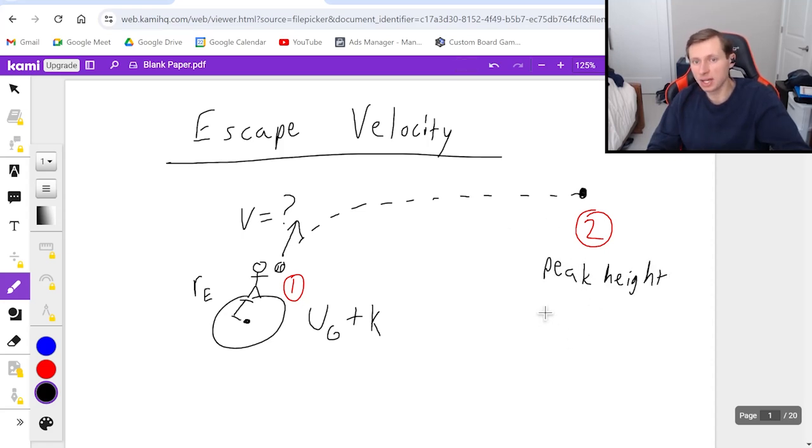In other words, at peak height, the velocity is zero. So there's no kinetic energy. Let me explain why the velocity is zero. If there is some velocity, let's say the velocity is two meters per second, just making up a number, then that means that can't be the escape velocity because you threw it too hard. You had some leftover velocity.